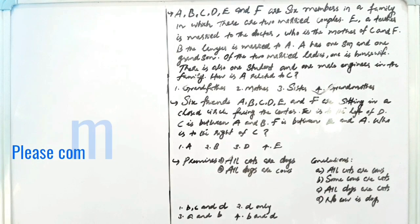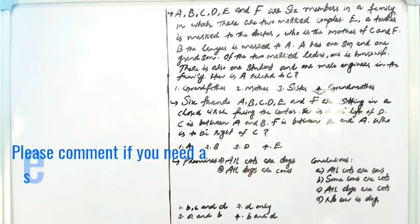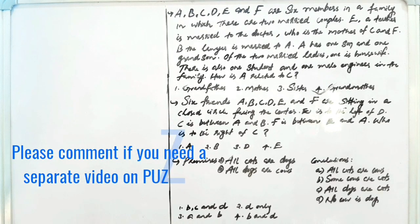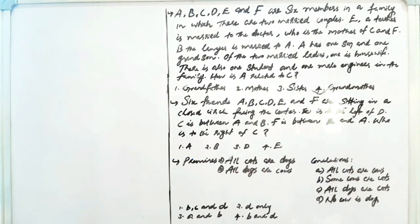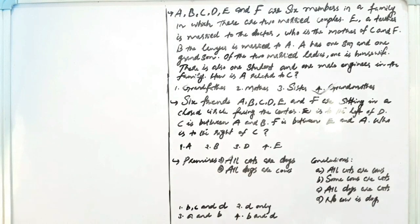The next question: Six friends A, B, C, D, E and F are sitting in a closed circle facing the center. E is to the left of D. C is between A and B. F is between E and A. Who is to the right of C? In a closed circle, everyone faces the center.